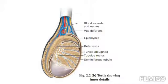The spermatogonia begin to undergo mitotic division at puberty and continue throughout the life. Once the organism attains sexual maturity, the spermatogonia begin to undergo mitotic division and it continues throughout the life of the organism.